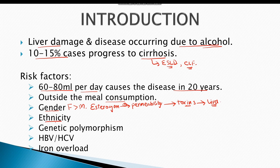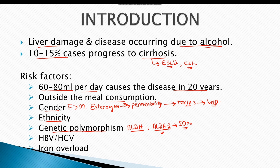Ethnicity also plays a major role in the disease. For example, the Black population and Asians are more prone to developing the disease than the White population of the USA. Genetic polymorphism also results in alcoholic liver disease. For example, alcohol dehydrogenase enzyme oxidizes alcohol into acetaldehyde. A variant known as ALDH2 is present in almost 50% of the Asian population. ALDH2 is not a very effective enzyme, resulting in decreased oxidation and increased toxicity of alcohol. Presence of infections such as hepatitis B and hepatitis C causes the disease to progress quickly into liver cirrhosis. Metabolic disorders such as iron overload also synergize the effects of alcohol, resulting in increased incidence of the disease.